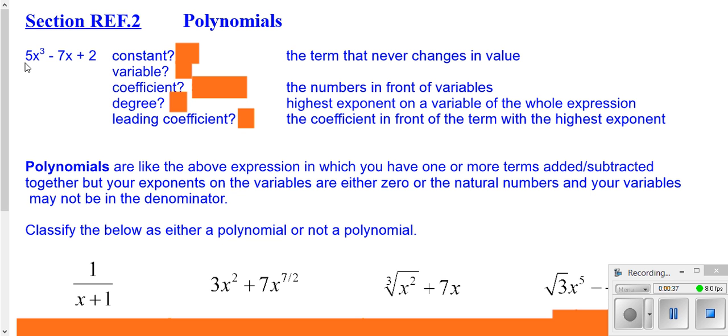Your constant is the one of the terms up here that never changes depending upon the value of x. If x is 1, you'll be able to figure out the value of these terms. But if x is, say, 8, you'll get a different value for these terms. But no matter what x is, the 2 never changes its value. So, 2 is referred to the constant.